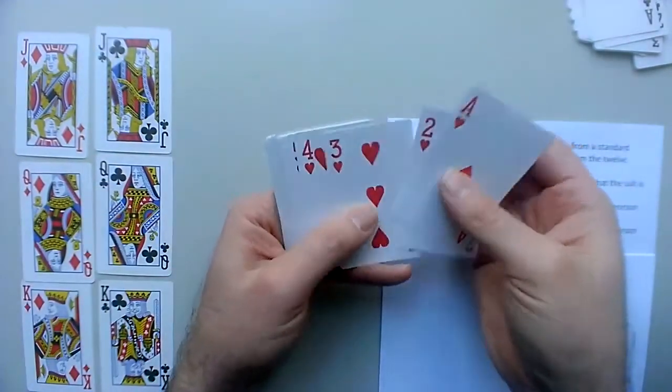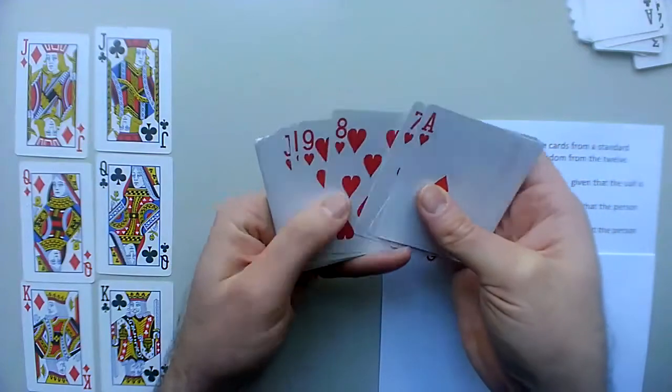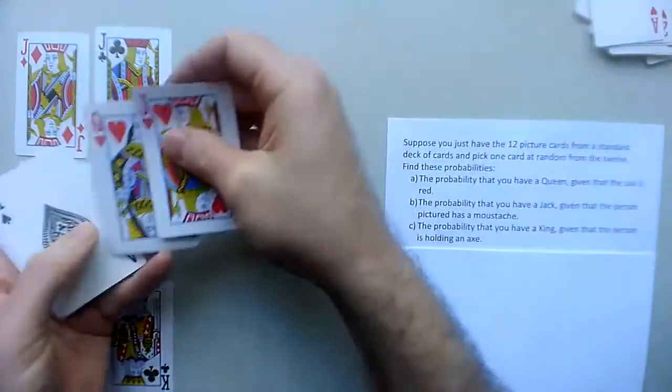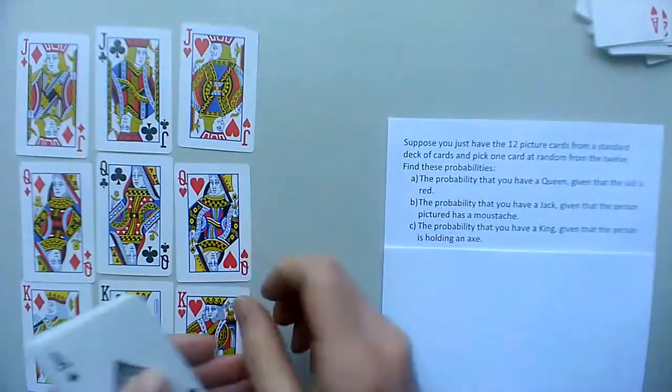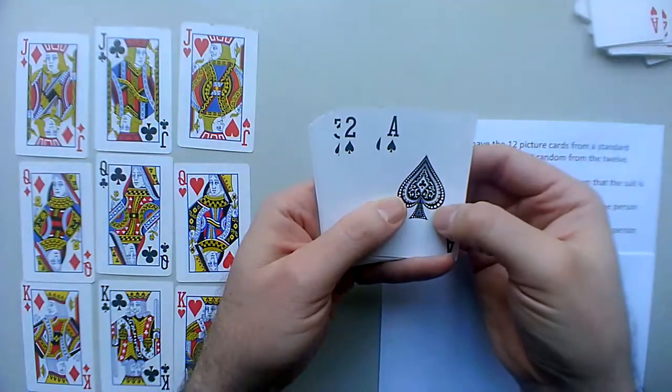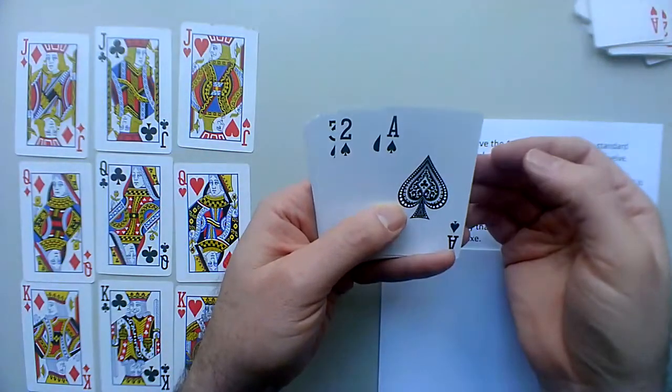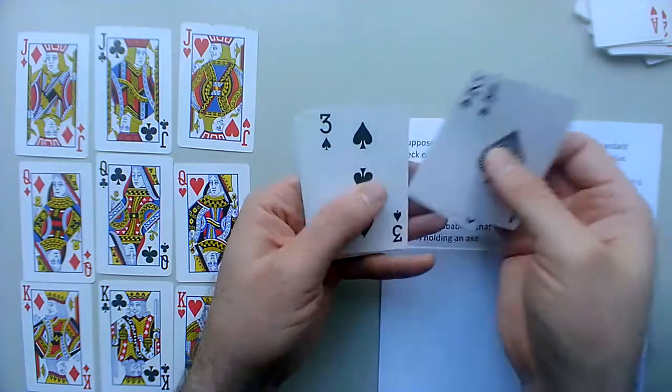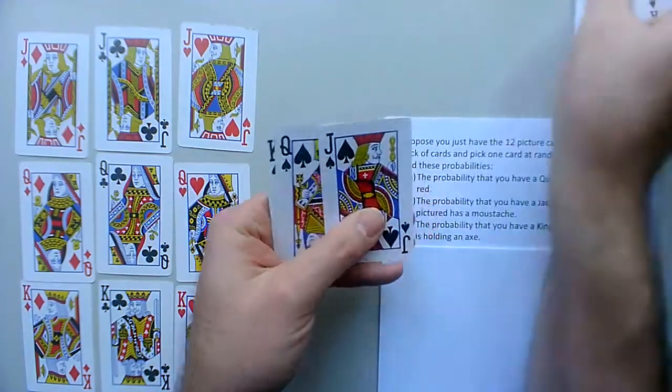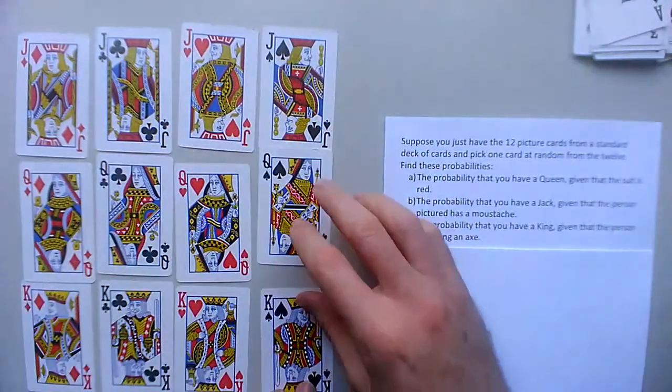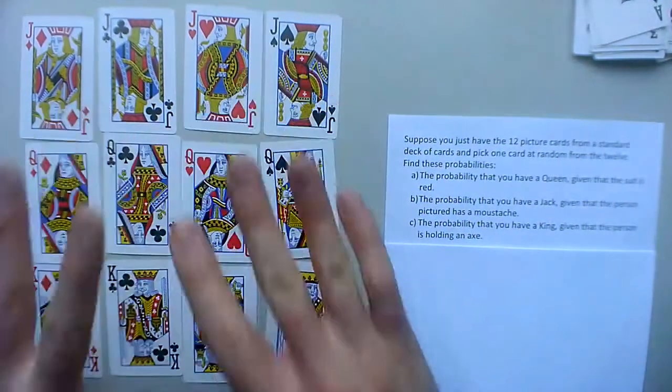And then I've got hearts which are red, ace up to ten, jack queen king. And then I've got spades which are also black, so ace up to ten, and jack queen king. So they're the 12 picture cards.